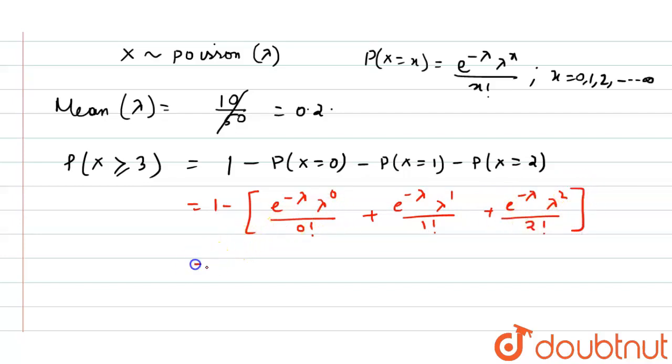So what we get: we get 1 minus e to the power minus 0.2, 1 by 1, plus 0.2 by 1, plus 0.2 whole squared, that is 0.04 divided by 2.